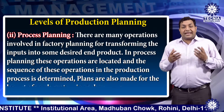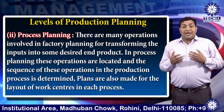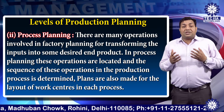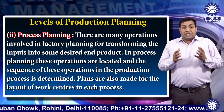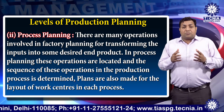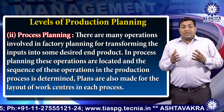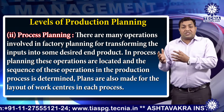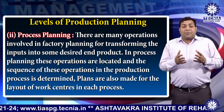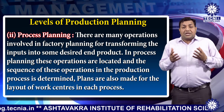The second level is process planning. There are many operations involved in factory planning for transforming inputs into desired end products. In process planning, these operations are identified and the sequence of these operations in the production process is determined. Plans are also made for the layout of the work centers in each process for achieving the maximum objective of production planning.